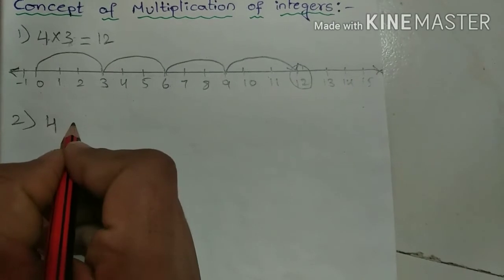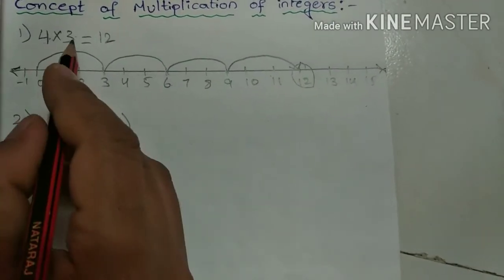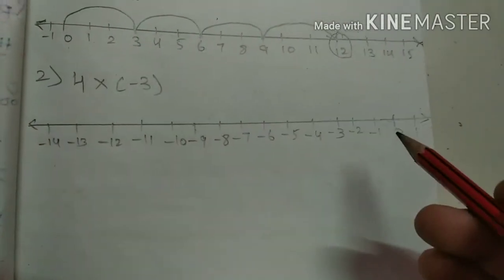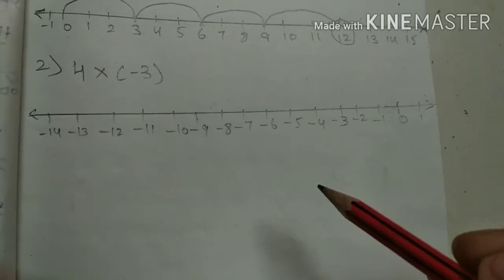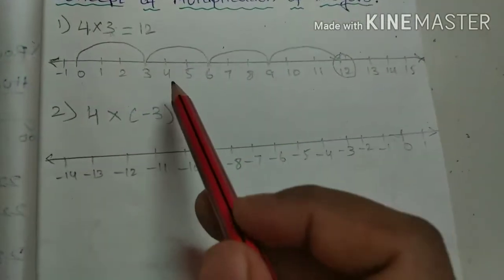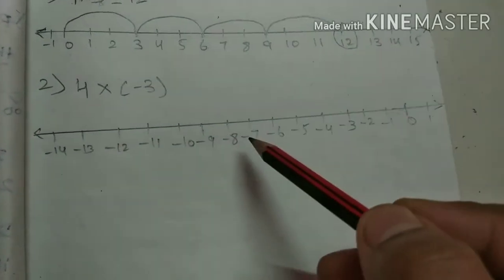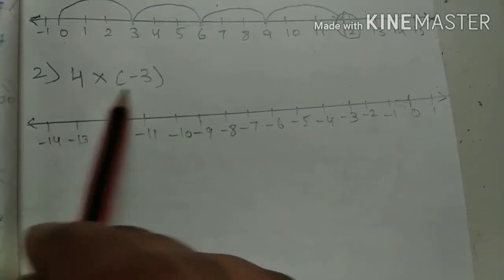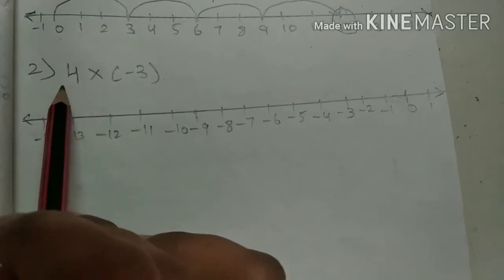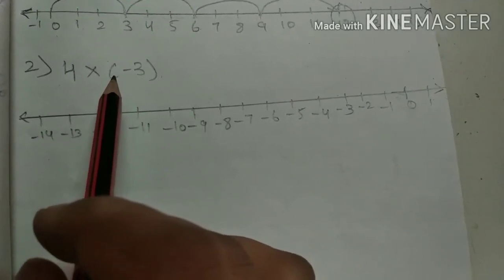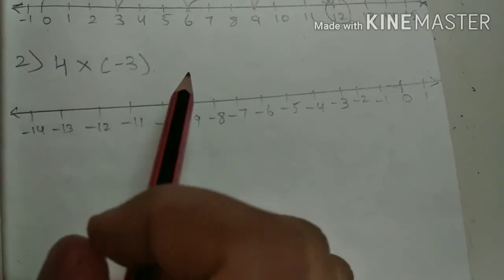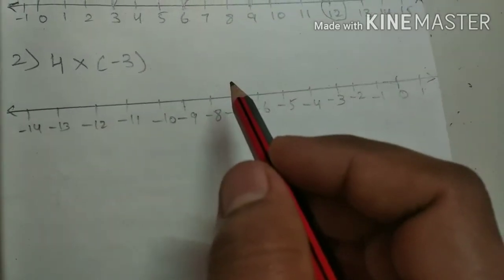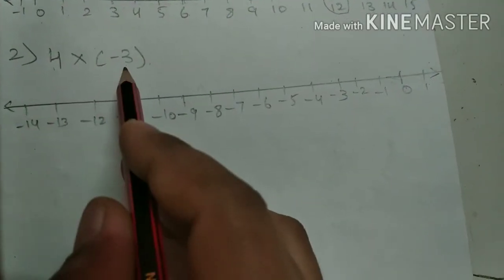Now I take 4 into minus 3 — first a positive integer, then a negative integer. After drawing the number line, include enough negative integers on the left side. We know 4 × 3 = 12, but here we have one positive sign and one negative sign. If we multiply one positive and one negative, the result will be negative — so minus 12 is the answer.